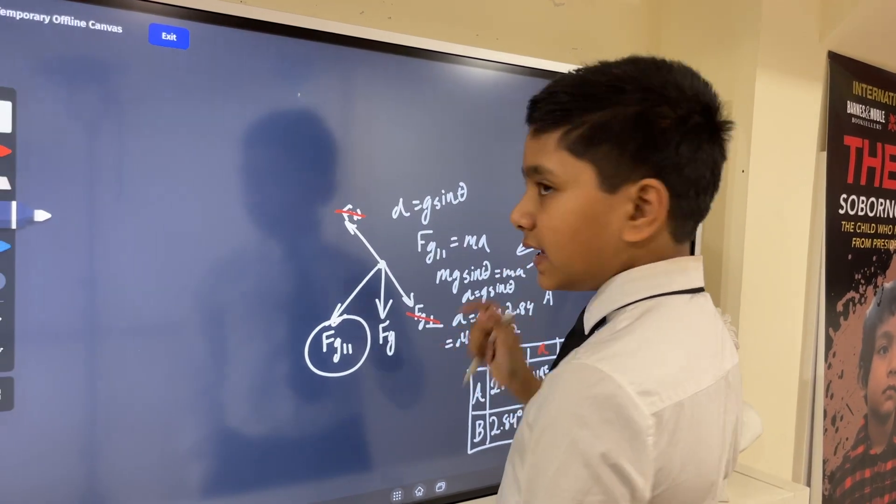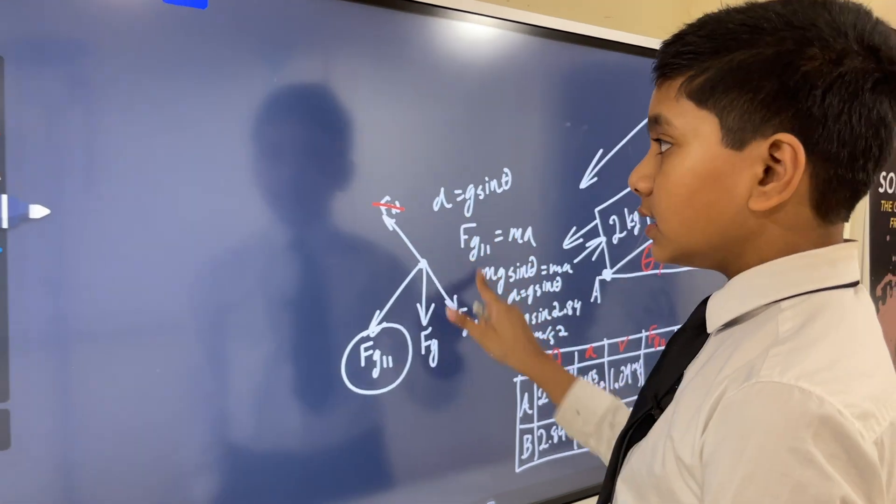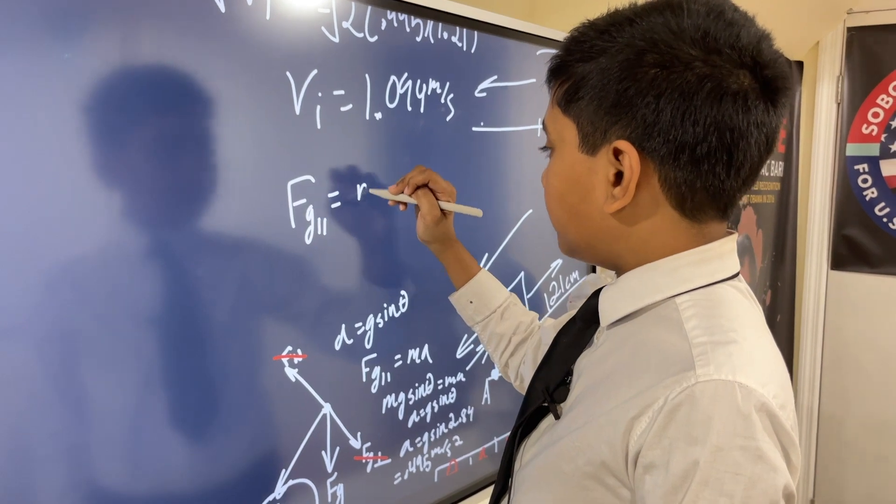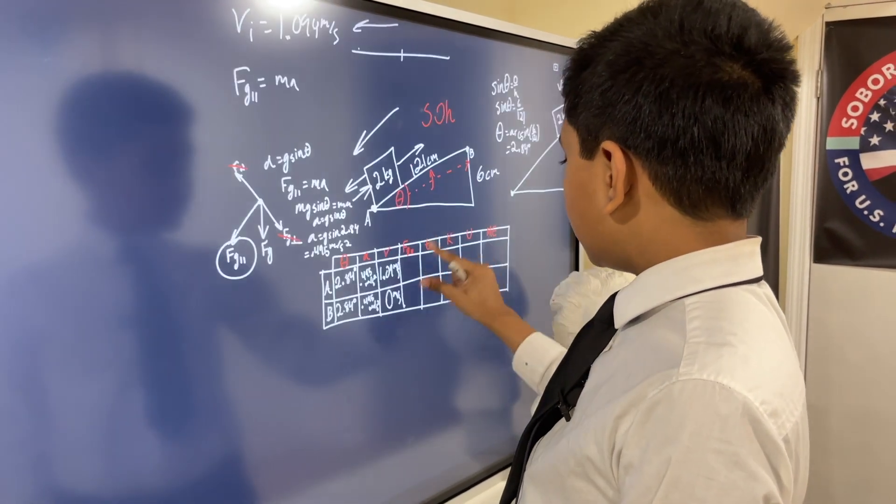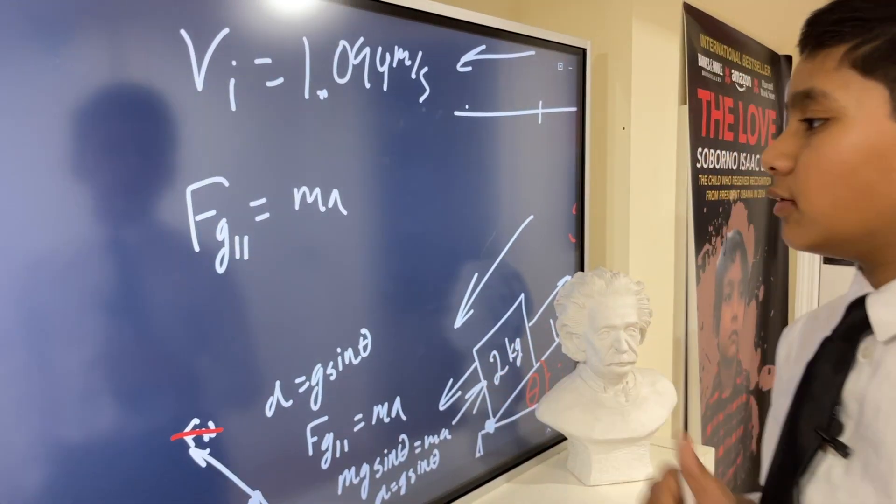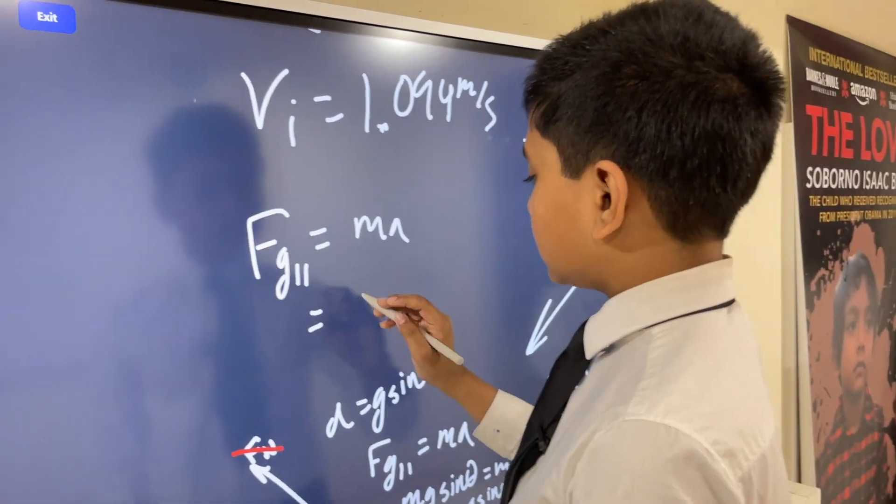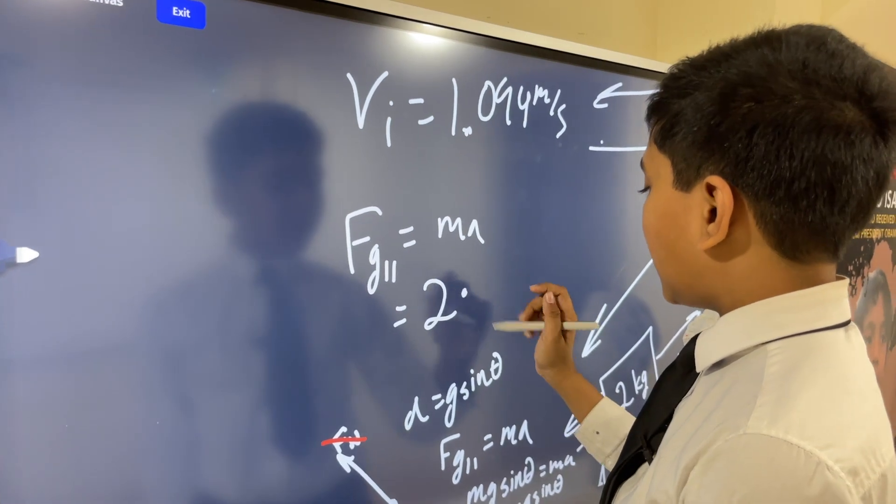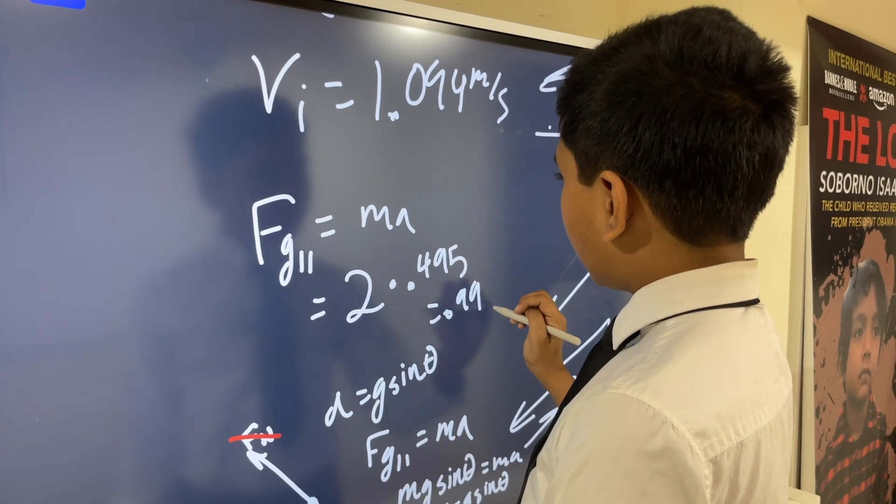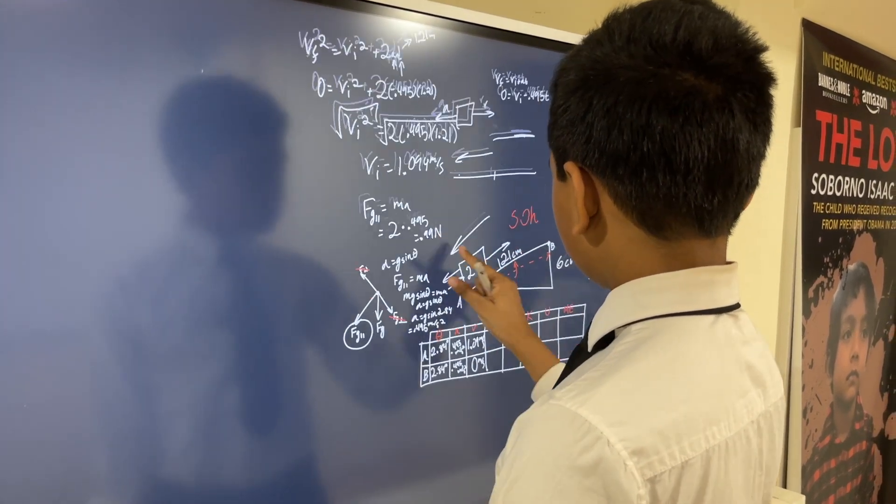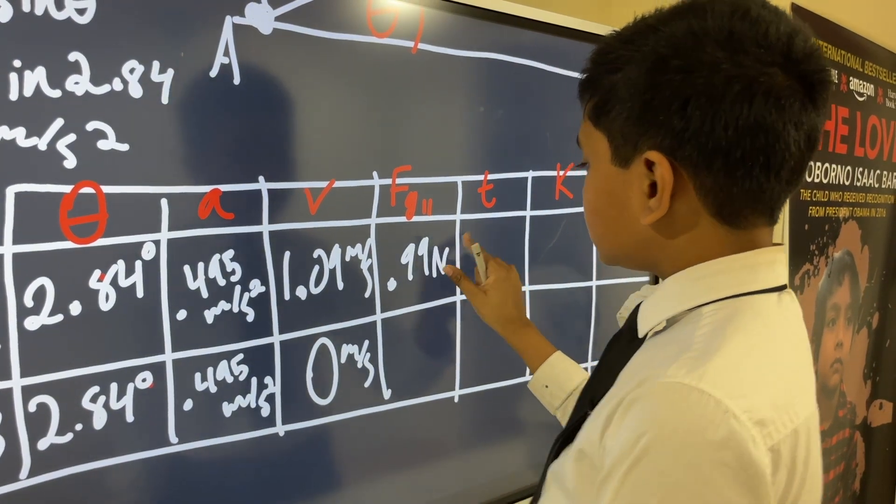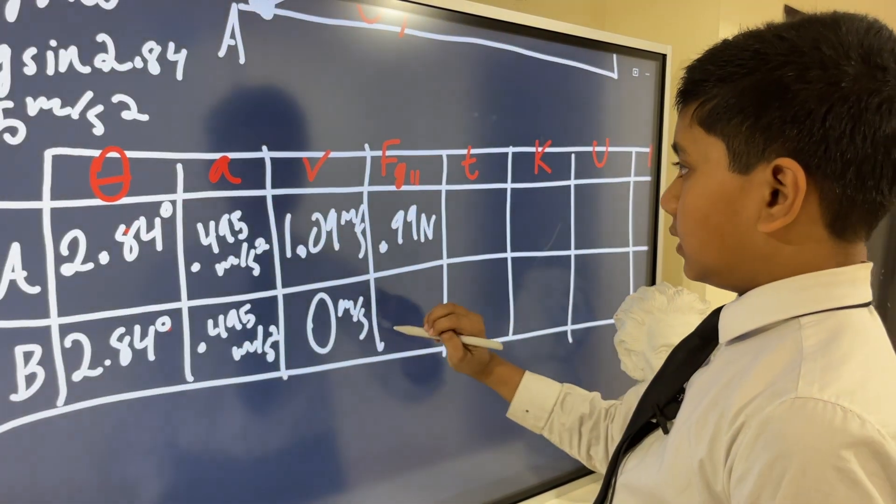We know FG parallel is MA, and we already know A. That means all we have to do to find FG parallel is multiply A by M. And side note, FG parallel will be the same in both locations. Now, that means FG parallel is just 2, which is the mass, times 0.495, which is the acceleration, which is 0.99 newtons. 0.99 newtons and 0.99 newtons.